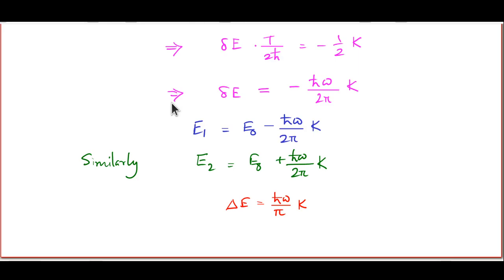The energy E1 for the ground state turns out to be E0 minus h-cross omega over 2 pi times K, and E2 for the first excited state is E0 plus h-cross omega over 2 pi times K. The energy splitting delta E is h-cross omega over pi times K, which agrees completely with our conclusion from the two-level model that the energy shift is proportional to epsilon, the amplitude for tunneling between the two wells. So here the WKB method makes more concrete our supposition that tunneling between one well and the other leads to a splitting of the energy levels.